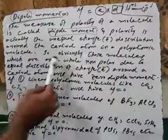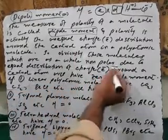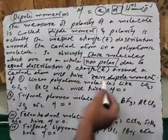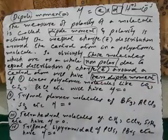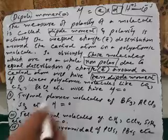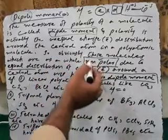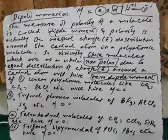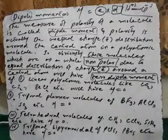Molecules which are as a whole non-polar due to equal distribution of charge around the central atom will have zero dipole moment. We will first discuss those molecules which have resultant zero dipole moment. Those molecules are non-polar because the charge has been distributed equally around the central atom. Such molecules will have resultant zero dipole moment.